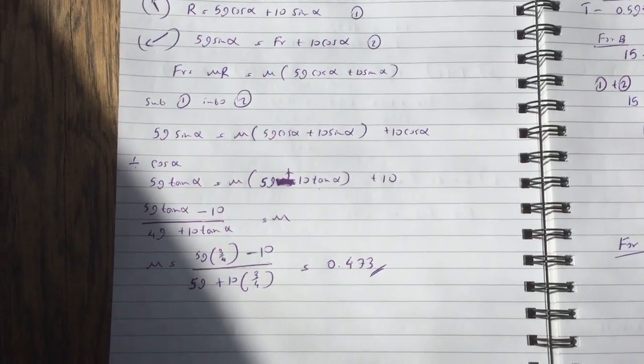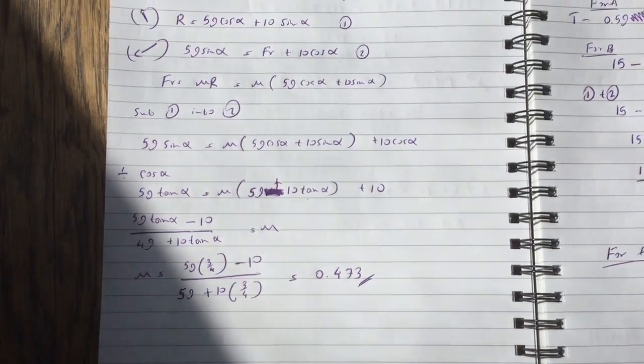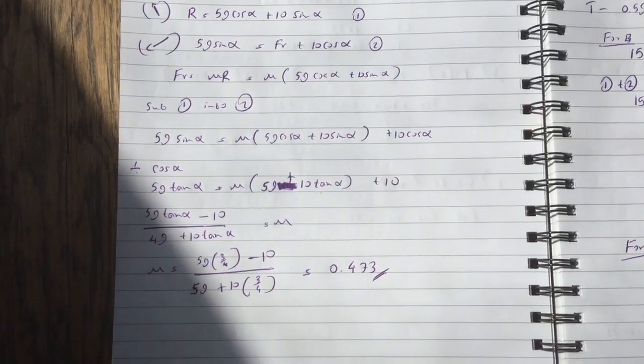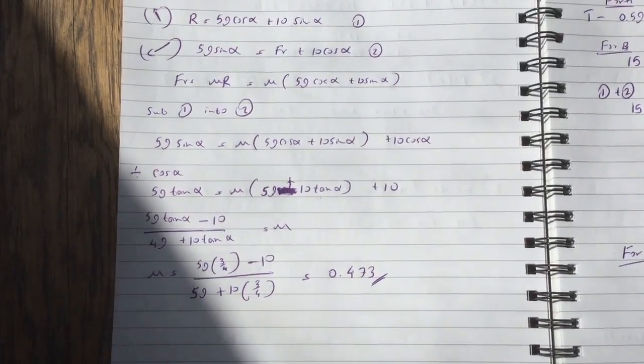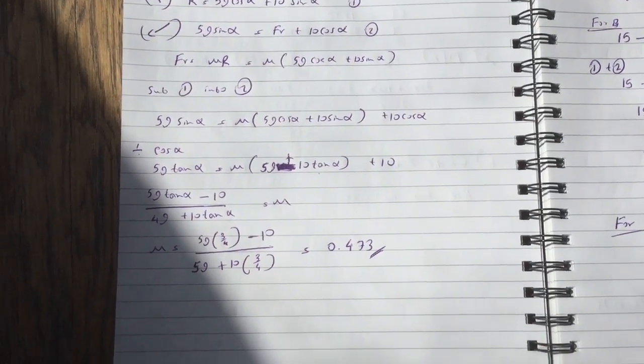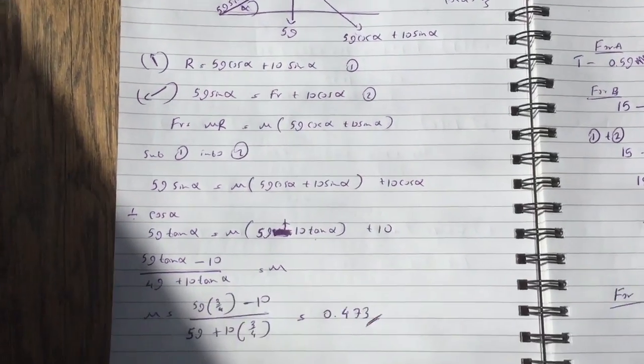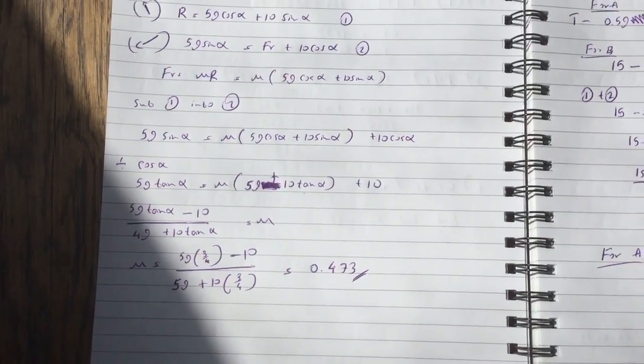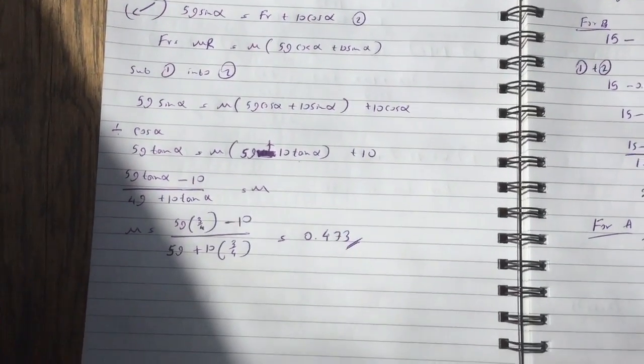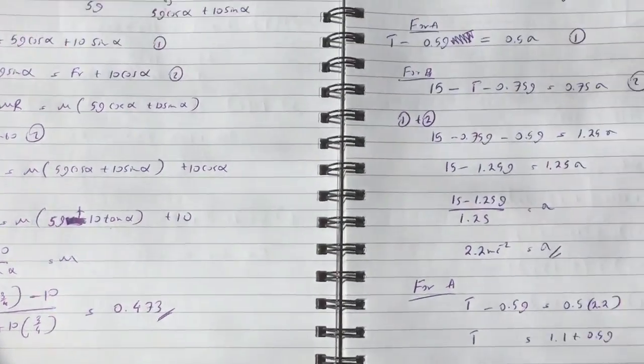So basically the first one becomes 5g tan alpha and then 5g cos alpha becomes just 5g. 10 sin alpha becomes 10 tan alpha and 10 cos alpha becomes 10. And then you just rearrange it. So you take the minus 10 to the other side and divide by this bracket and mu equals all that. You can see in the corner there sin alpha is 3 fifth, cos alpha is 4 fifth. Obviously tan alpha is 3 over 4. You sub that in and you get mu equals 0.473.